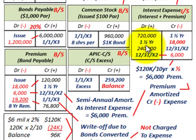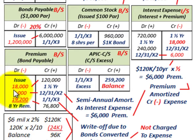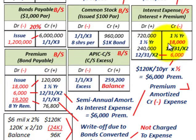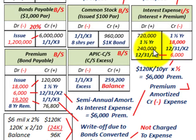When we amortize this premium, the debit reduces our premium on bonds payable. The associated credit goes to interest expense, which in fact reduces our interest expense. A debit would be increasing interest expense; the premium credit reduces interest expense.